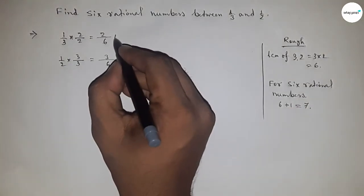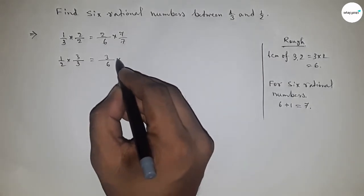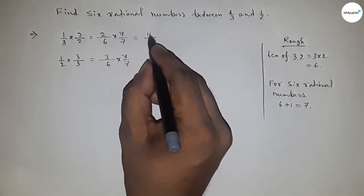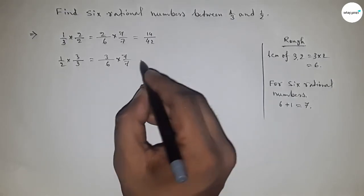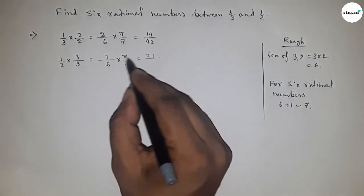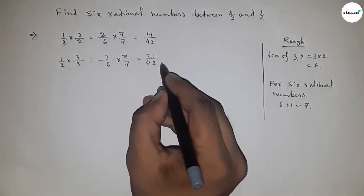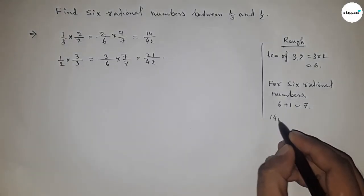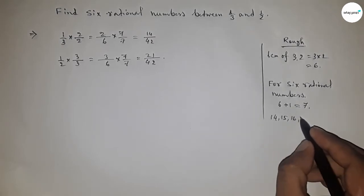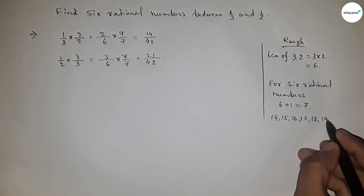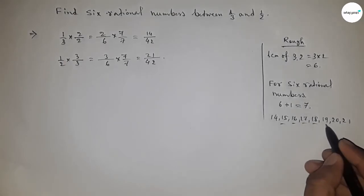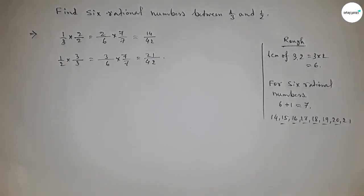So this is 14/42 and this is 21/42. Between 14 and 21 we get 6 numbers, so by these 6 numbers we can form 6 rational numbers.